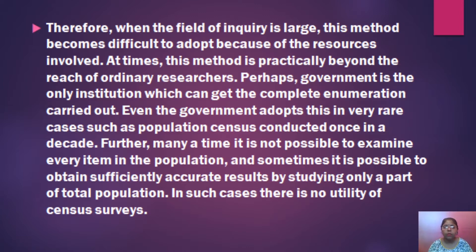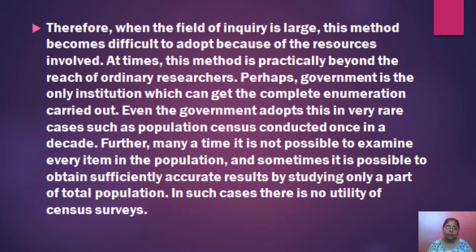Many times it is not possible to examine every item in the population. Sometimes it is possible to obtain sufficiently accurate results by studying only a part of the total population. When it is not possible to get complete accuracy, we study each part of the population. If we study only a part of the population, then it will not be census — it will be a sample survey.